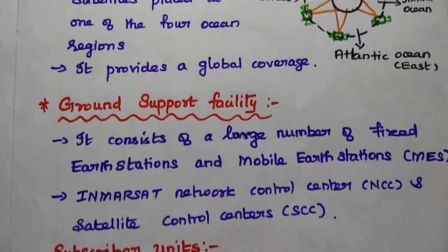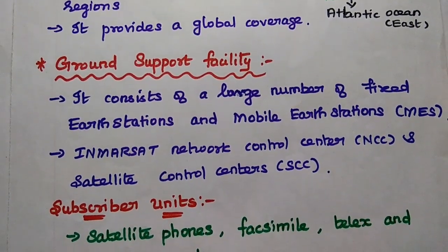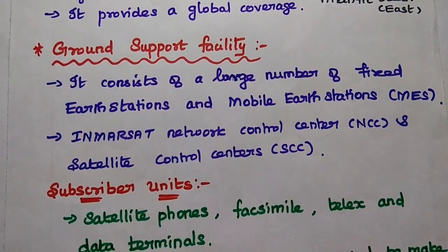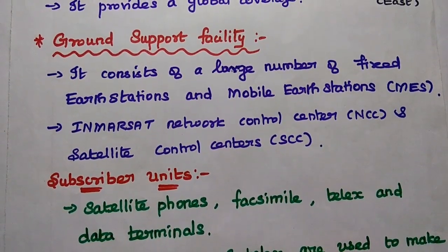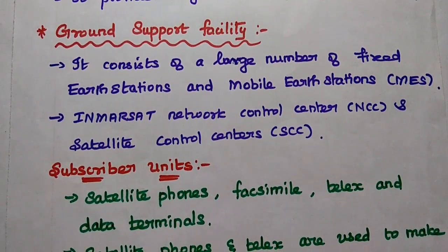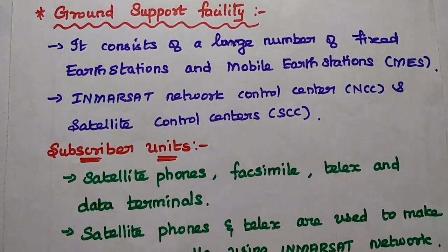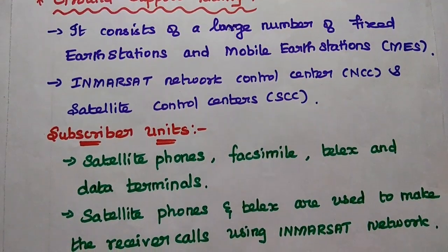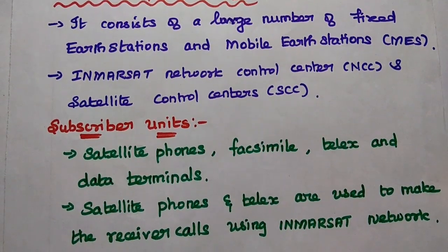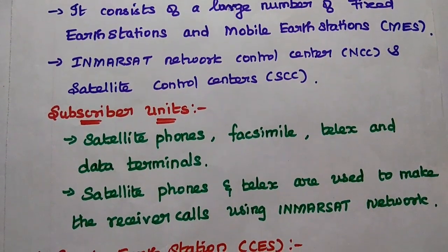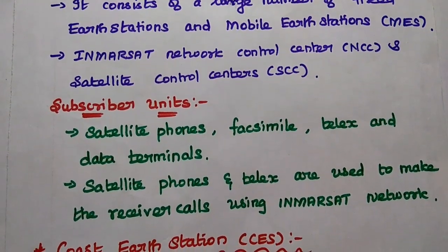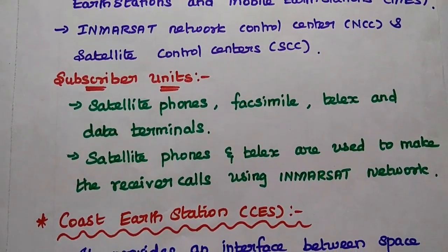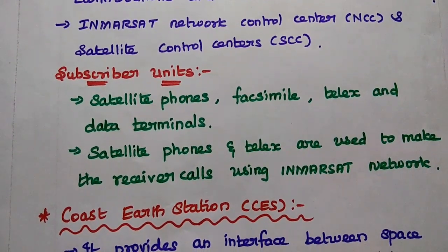The ground support facility consists of a large number of fixed earth stations as well as mobile earth stations to provide proper interconnection between the satellite and the user. The Inmarsat network control center and satellite control centers are very important to make a connection between the ocean and the subscribers — that is, the end user.